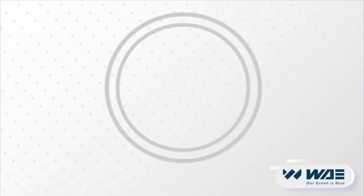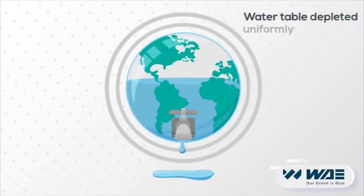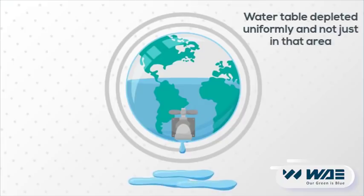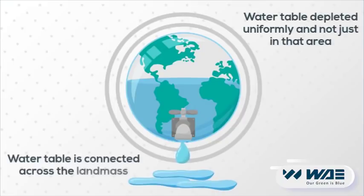Millions of gallons of water out of the ground leave the water table depleted uniformly, and not just in that area, because the water table is connected across the land mass.